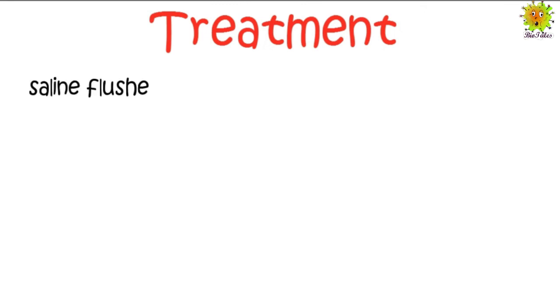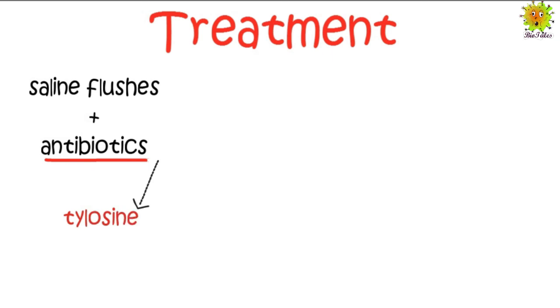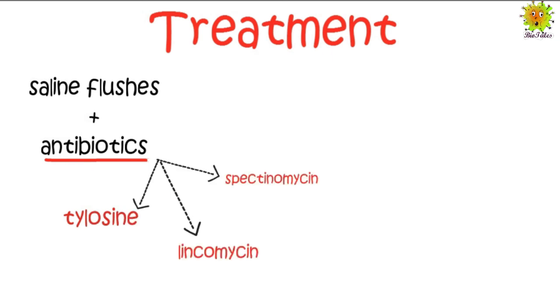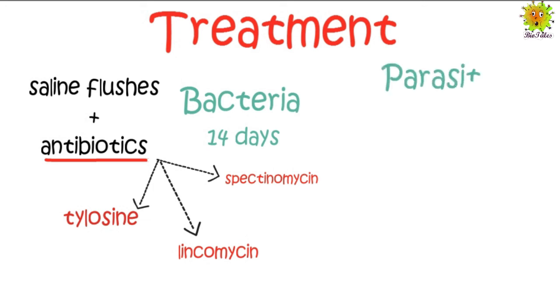For the treatment of conjunctivitis, saline flushes are recommended along with antibiotics. Antibiotic-containing ointments or sprays are normally recommended; the antibiotics tylosin, lincomycin, or spectinomycin are usually prescribed. Oral antibiotics are given in the case of respiratory symptoms. These antibiotics are normally prescribed for 4 days. Since antibiotics are only effective against bacteria, if the causative agent is a parasite, it is removed manually along with antiparasitic drug administration.